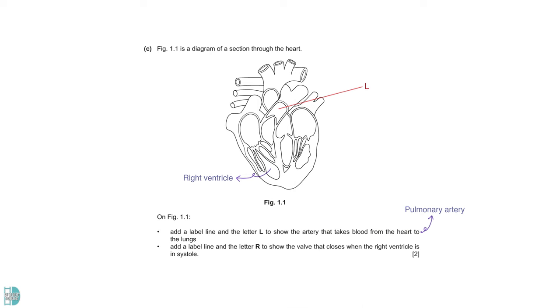The second one is R, to show the valve that closes when the right ventricle is in systole. R is the tricuspid valve. It is in between the right atrium and right ventricle, which is here.